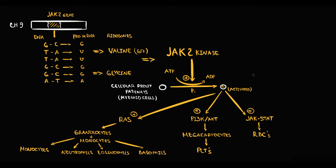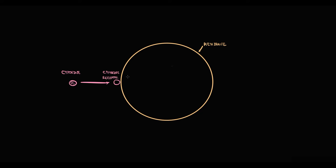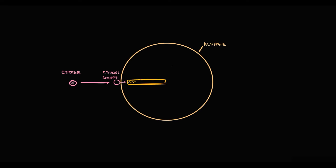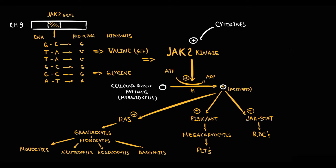Importantly, JAK2 kinase serves as the conductor. It receives signals from cytokines and only then begins to activate intracellular pathways. Recall that because cytokines have a protein structure and proteins are polar molecules, they cannot diffuse into the cell — they require a receptor on the surface of the cell to receive and transmit the signal into the nucleus. So when cytokines act on a cytokine receptor on the cell surface, they require JAK2 kinase to deliver this signal into the nucleus. Basically, JAK2 kinase is just the conductor of the signal.